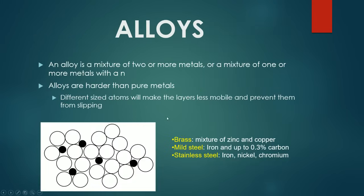Alloys are basically a mixture of two or more metals, or a mixture of one or more metals with a non-metal. Alloys are harder than pure metals, and the reason for that is because in an alloy, you have different sized atoms, and that will make the layers of the metallic structure less mobile, and therefore preventing them from slipping.